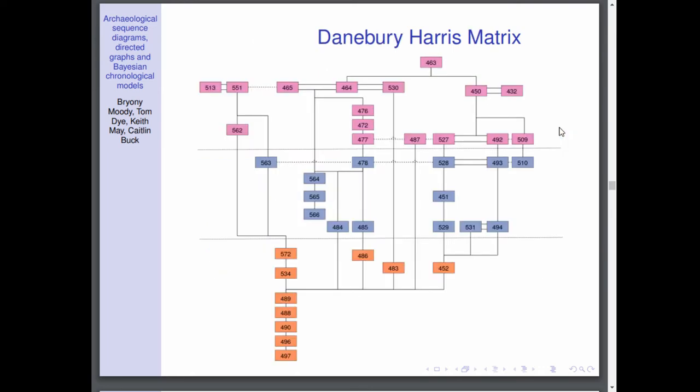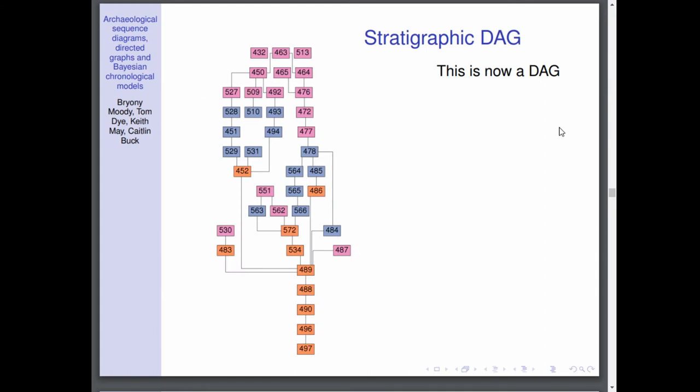So getting onto the case study now, here is the Danebury Harris matrix that I'm looking at. It is part of a Harris matrix, not the full one that was found in the archives. I know that coloring phases isn't convention in Harris matrix because there's no need for that as you structure the phases physically, but for consistency with the other graphs that we're going to look at, I've just colored them. Orange is phase three, blue is phase two, and pink is phase one.